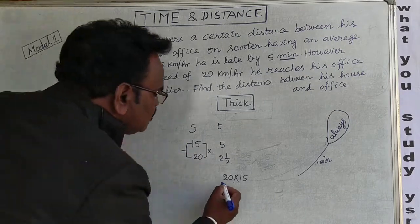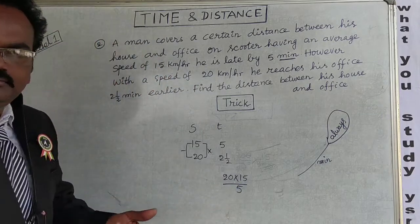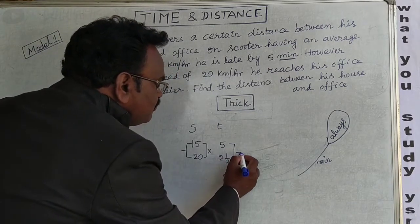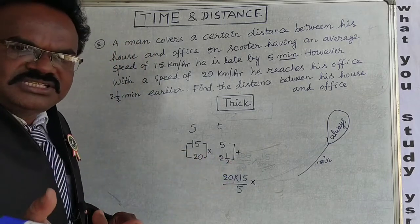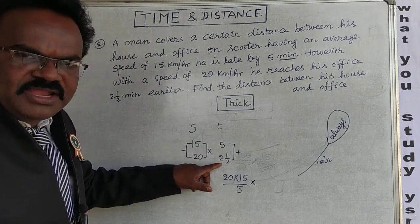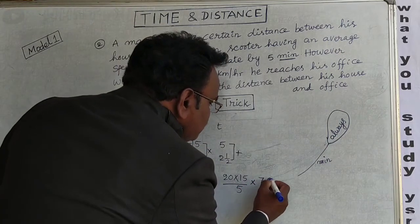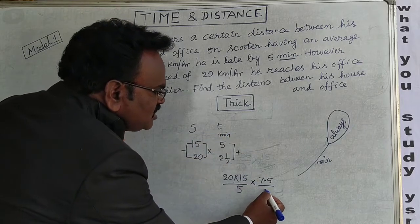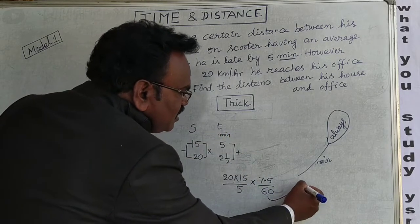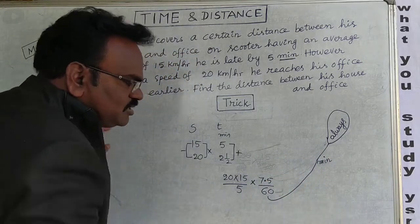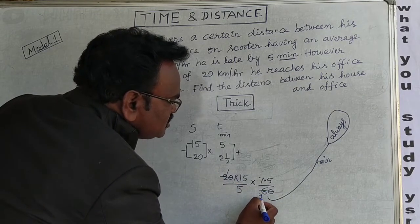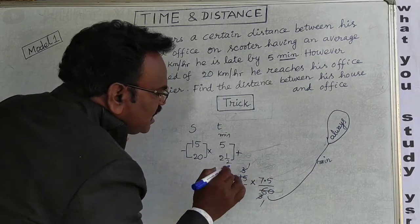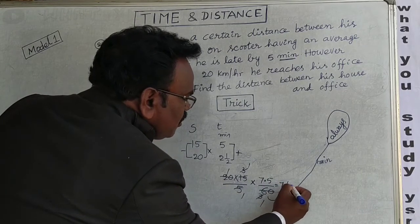Subtract the speeds: 20 − 15 = 5. Then add the two times: 5 + 2.5 = 7.5 minutes. Since time is in minutes, divide by 60. Simplify — cancel common factors — and the answer is 7.5 km.